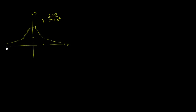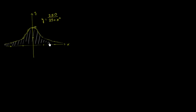Right here we have the graph of y is equal to 250 over 25 plus x squared. What I'm curious about in this video is the total area under this curve and above the x-axis — everything shaded in white here, including what we can't see as we keep moving to the right and to the left.